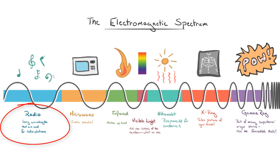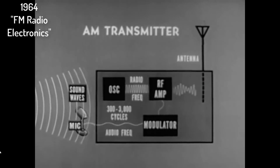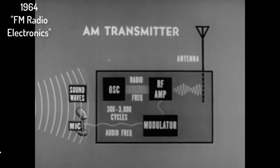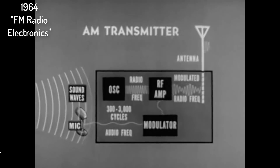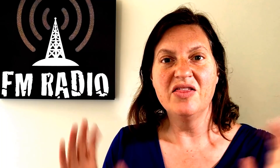Radio waves aren't sound waves — they're actually invisible light waves. Radio waves are used as the medium to transmit or carry the sound information. In AM radio, sound is converted into an electrical signal, and that signal is used to change the height or the amplitude of the wave. Thus the name AM radio, for amplitude modulation.